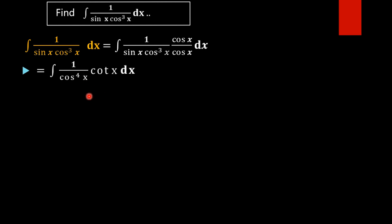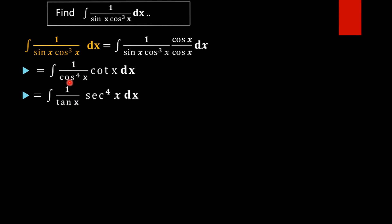Now we can use our trick to make this function into an integrable form. We rewrite cot x as 1/tan x, so cos⁴x can be rewritten using sec⁴x. We have tan x and sec⁴x here. We know that the derivative of tan x is sec²x, and we are going to utilize that in order to find the value of this integral.